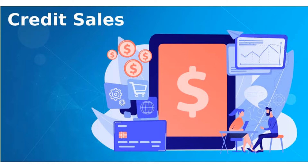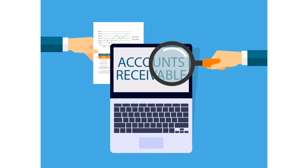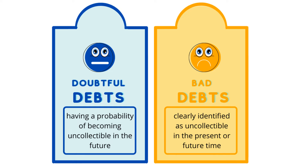we create an account called accounts receivable, which is classified as a current asset in the balance sheet because, as a result of the credit sale, there will be an inflow of an economic benefit in the form of cash that will take place within 12 months. Now the catch of offering credit to customers is that not all of the funds from these accounts will ultimately be received.